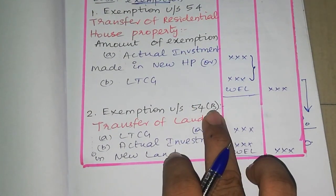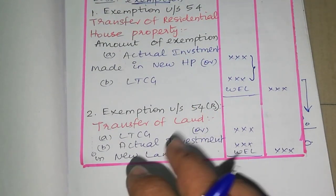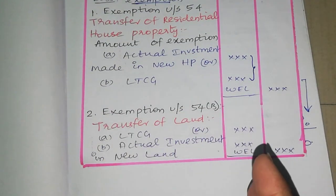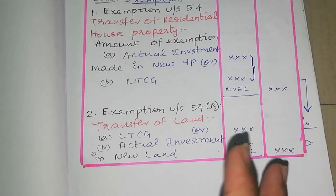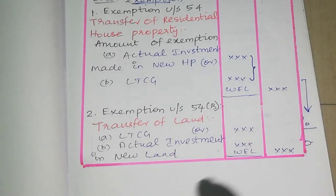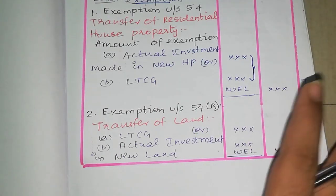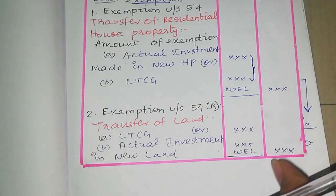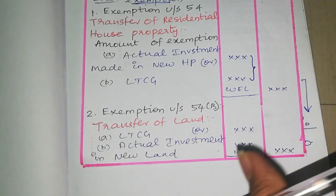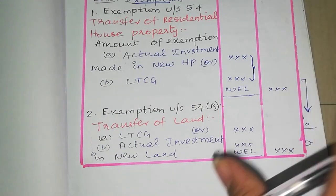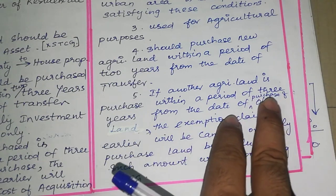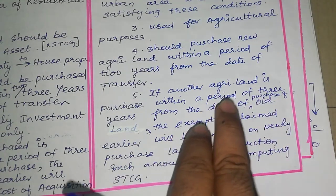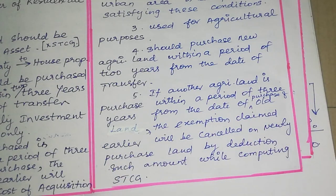Exemption Under Section 54B: if we have agricultural land and we transfer it, this exemption applies. The same conditions apply — it applies to individuals. The newly acquired land must not be transferred within 3 years. If you transfer the land or building within 3 years, it results in a withdrawal of the exemption.